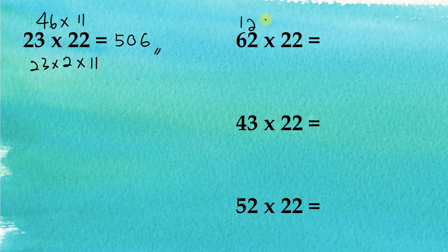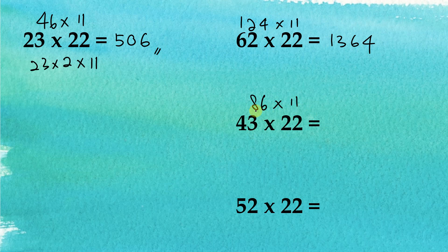Next, 62 multiplied by 2 becomes 124, then 124 multiplied by 11. The first digit is 1, followed by 3, then 6, and the last digit is 4, giving 1364. For 43 multiplied by 2 equals 86, then 86 multiplied by 11: the first digit would be 8, but the sum of the digits is greater than 9, so it becomes 9.